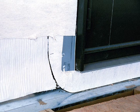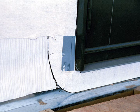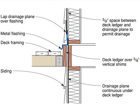The easiest way to solve this problem is to make sure the drainage layer is installed shingle fashion over the Z-flashing. This can be done by installing the ledger after the house wrap is installed, then cutting it and sliding the Z-flashing behind the house wrap or building paper. Another solution is to create an air space between the deck ledger and the house.